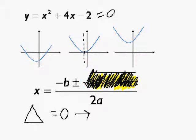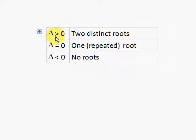Okay. So, to summarize then, a discriminant is greater than zero, two distinct roots. It's equal to zero, one repeated root. And it's less than zero, no roots.